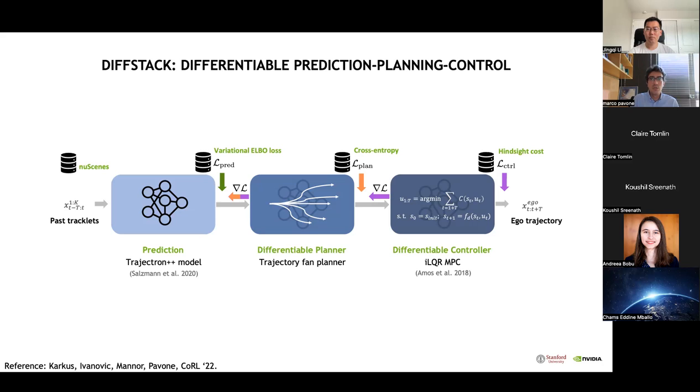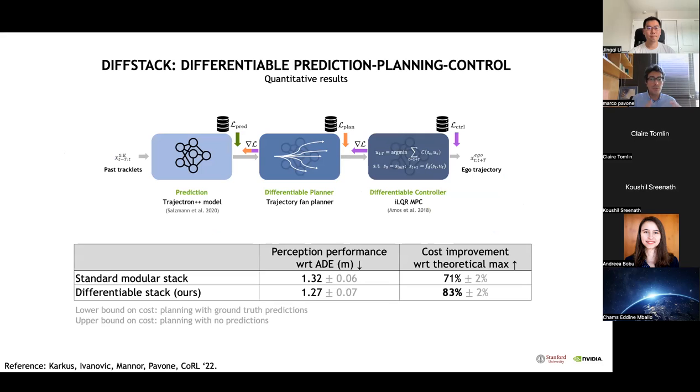We define training losses for each module: a standard variational ELBO loss for the prediction model, a cross-entropy loss for the planner, and a hindsight cost for the controller. The hindsight cost measures the planning quality in hindsight after observing the future behavior of other agents. To characterize the benefits of this approach, we compare our differentiable architecture to a standard architecture where the prediction module is learned but other modules are manually tuned. The table shows prediction performance and average cost of the planning trajectories.